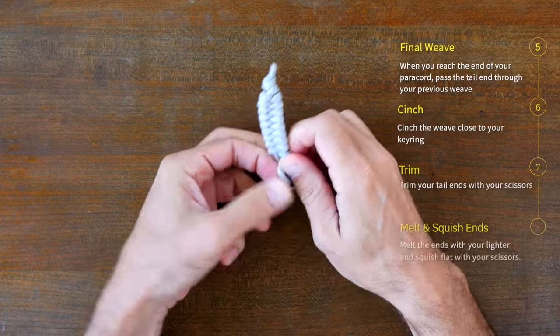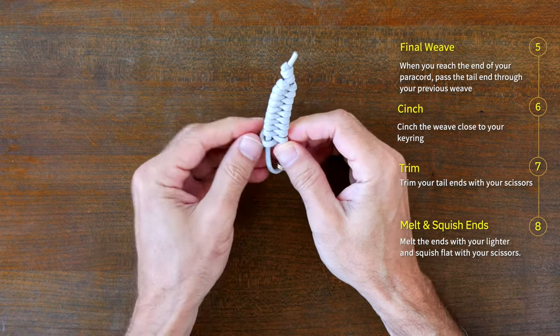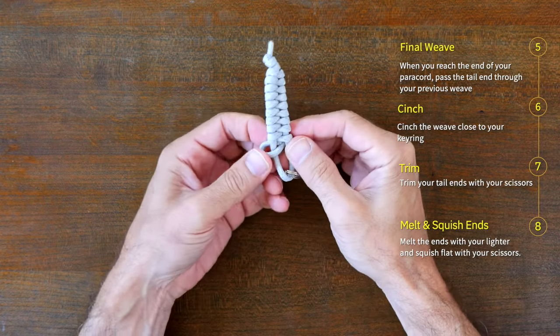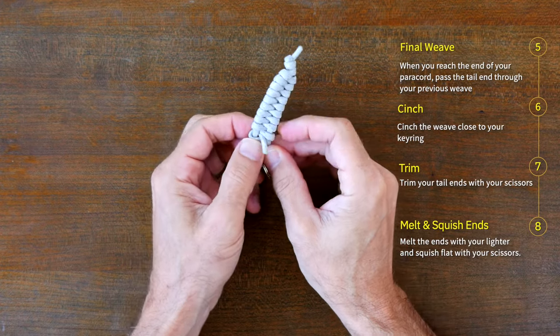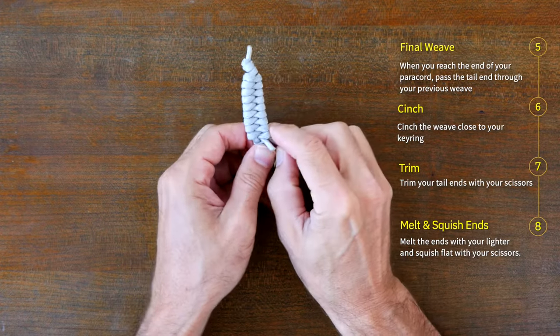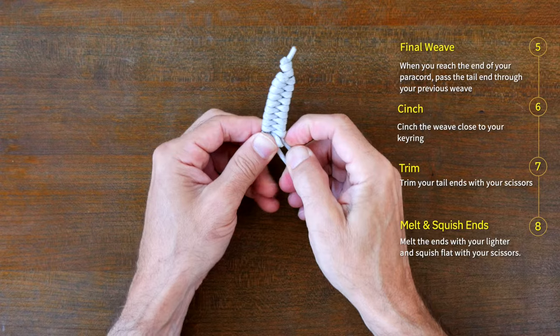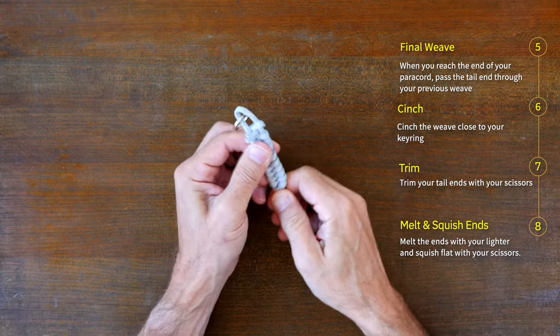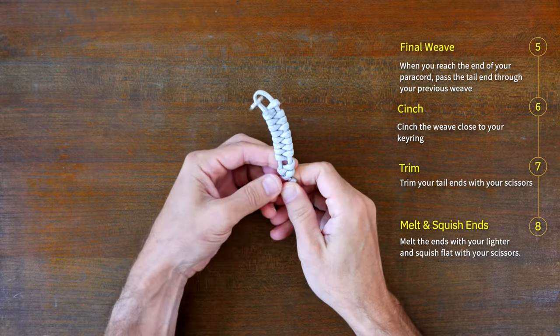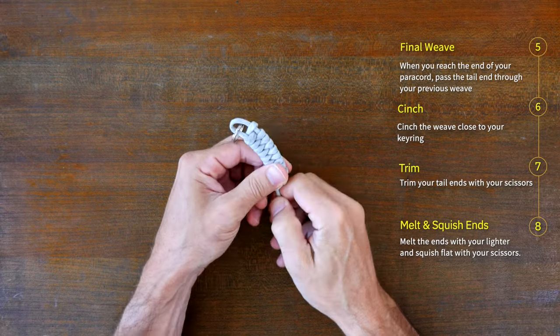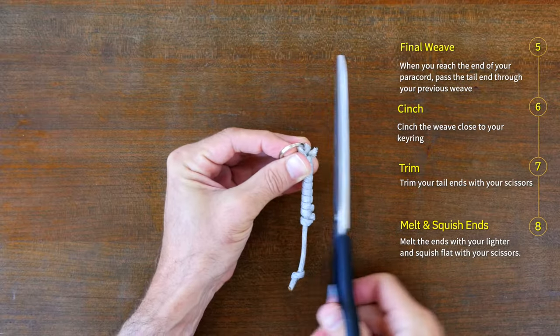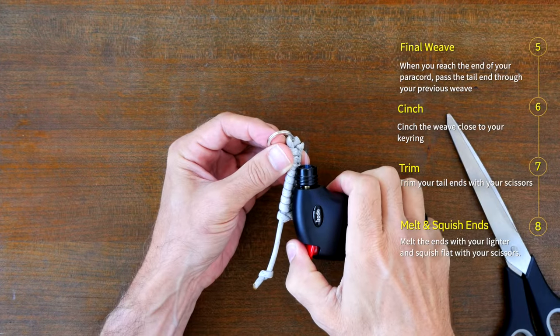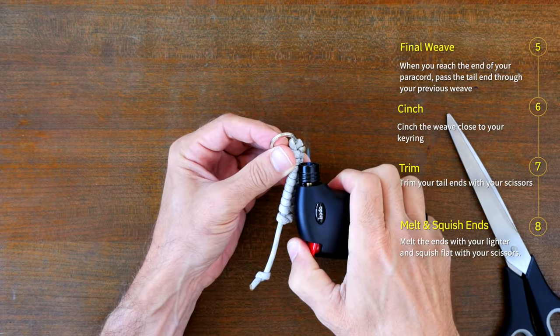When you reach the end of your keychain or the end of your cordage, pass the tail end through and between the previous weave. If necessary, you can slide and cinch all your weaves toward your key ring, sliding the weaves and pulling the short strand. Cinch and adjust your weaves, then trim and melt your ends to make a tidy little fishtail paracord keychain.